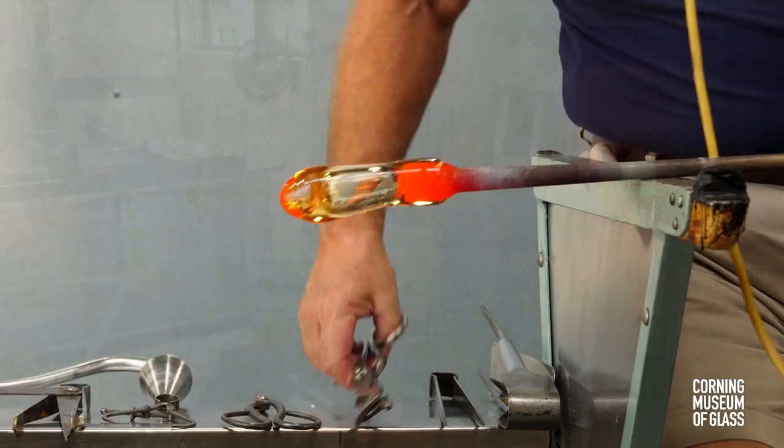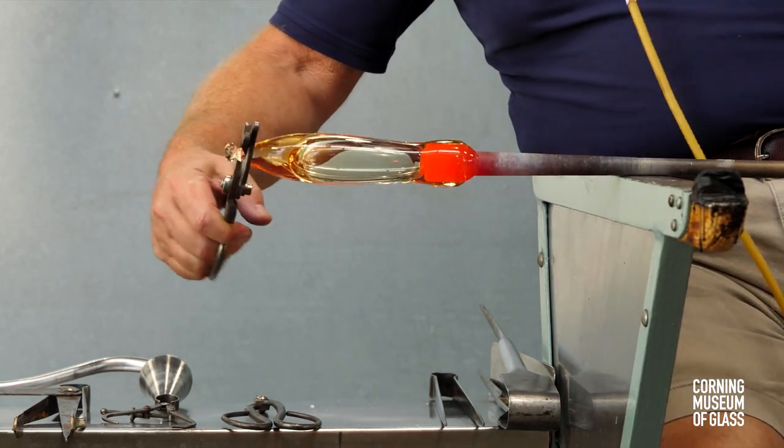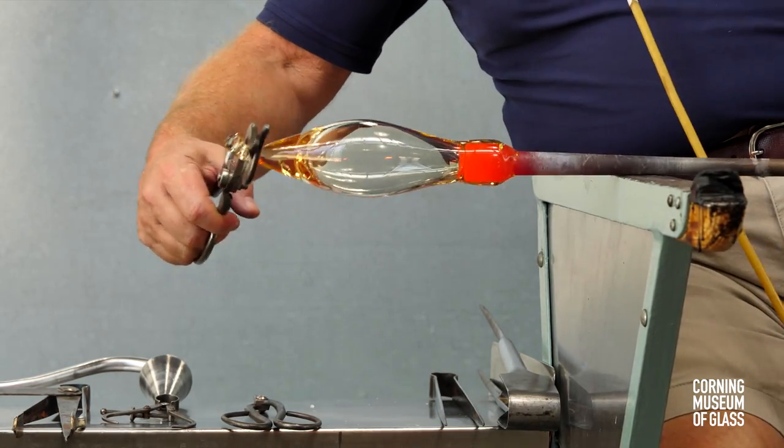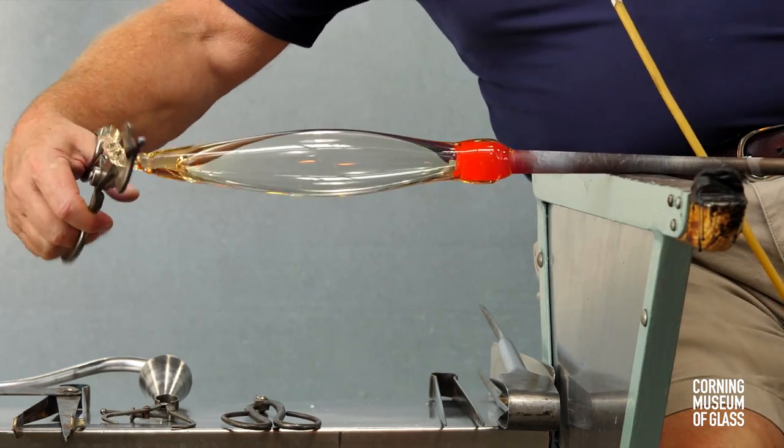The rubber tube or blow hose is used to further inflate the glass as the gather is pulled. This results in a long cylinder.